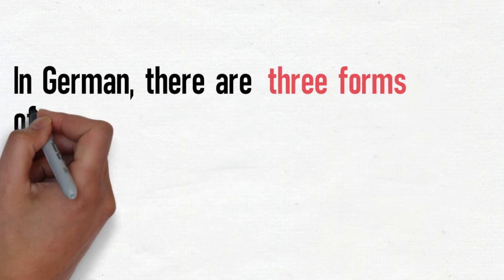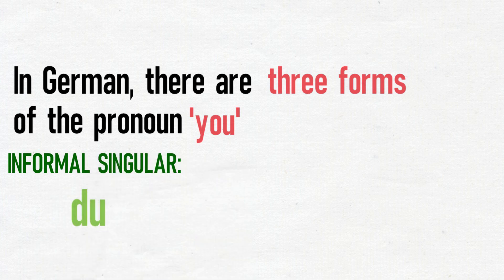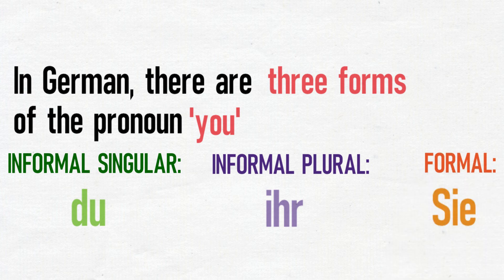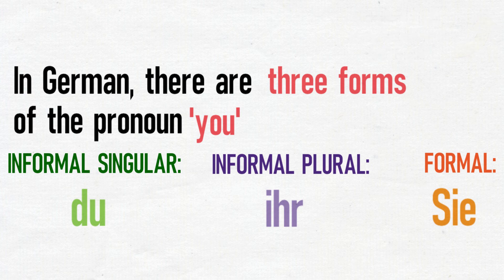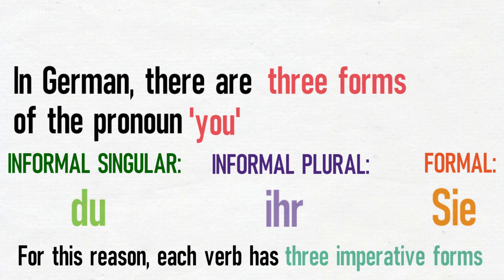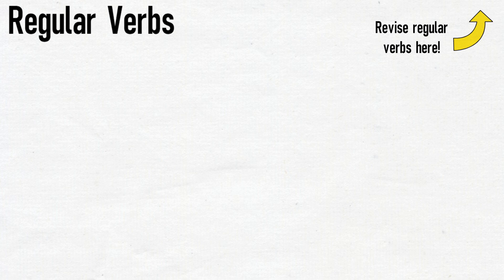In German, there are three forms of you. We use du for an informal singular sense, ihr for informal plural, and sie for formal. If you're not sure what I mean by formal and informal, it's a good idea to go back and watch my explanation of these terms. As we have three forms of you, each verb will have three imperative forms. Let's look at how regular verbs change in the imperative.